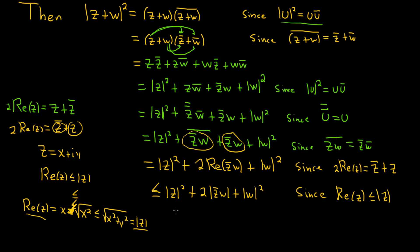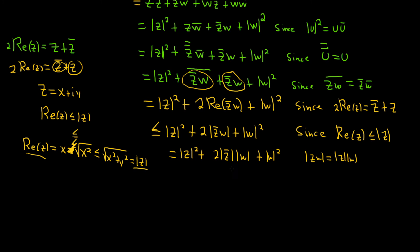Now we can break this up further. The modulus of a product is the product of the moduli, and whenever you take the modulus of the conjugate, that's the same thing as the modulus of the regular complex number without the conjugate. So modulus of z-conjugate times w equals modulus of z times modulus of w.